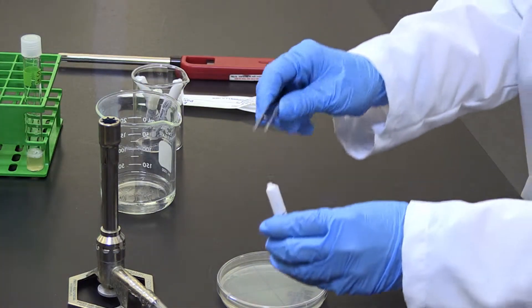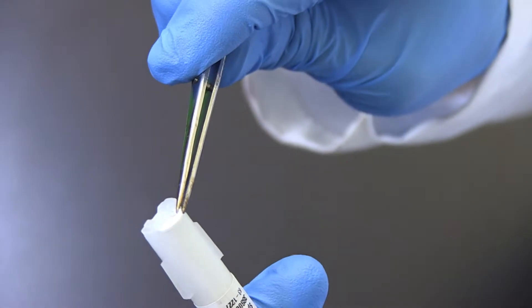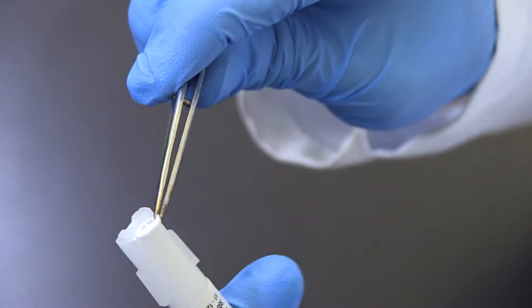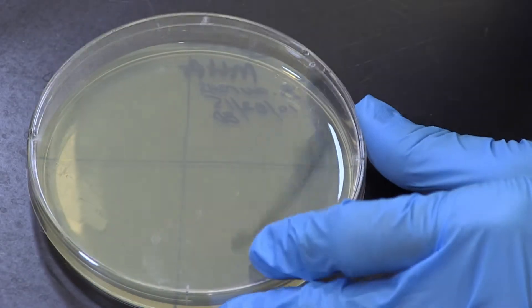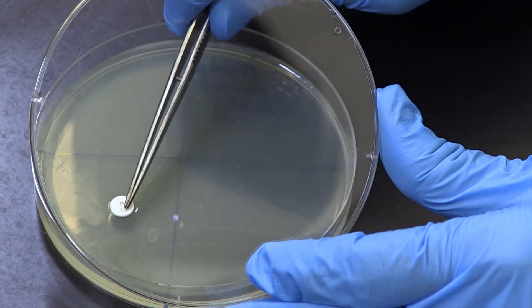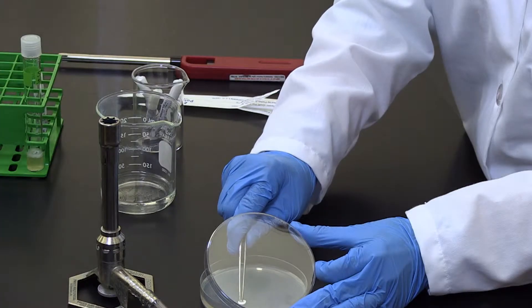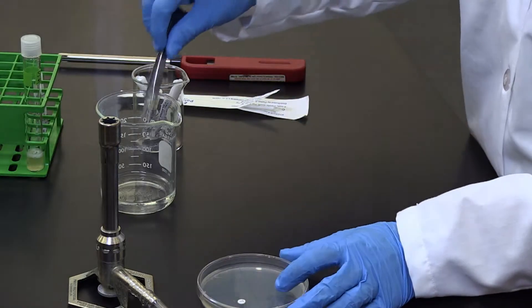Keep the beaker of ethanol away from the flame. Obtain a disc impregnated with an antibiotic and place it on the surface of the agar in the center of a divided quadrant. Gently tap the disc with the forceps to ensure better contact with the agar.